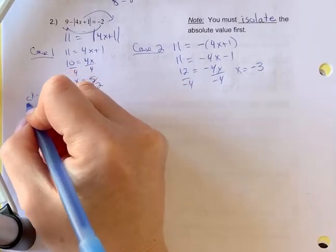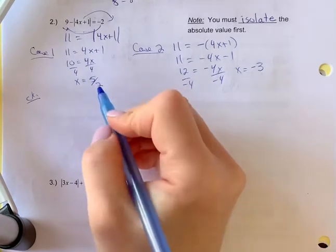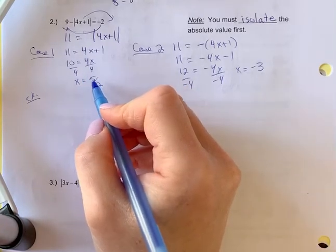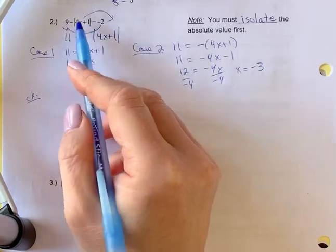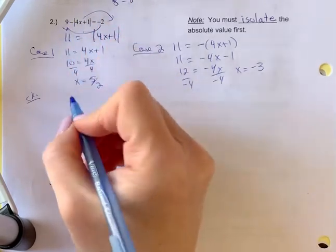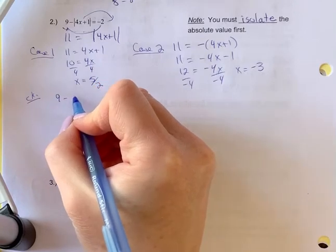Now, part of the solving process is the check, so we must check each one. When you're checking, you have to check with the absolute value symbols. I like to check with this, so if I made a calculation error, I catch it as well.